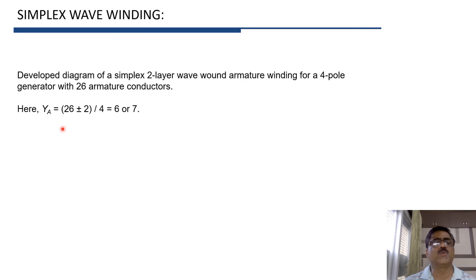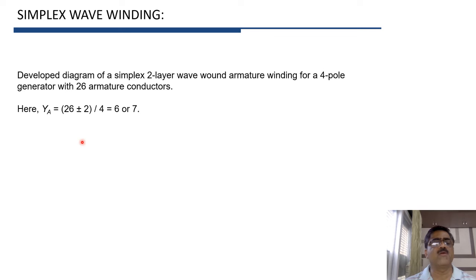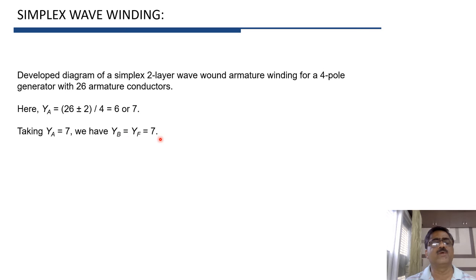YA = (Z ± 2) / P = (26 ± 2) / 4, so YA is either 6 or 7. Since YA is an integer, the winding is possible. We have to select the values of YB and YF — they must be odd and can be equal or differ by 2. We will take YA = 7 with YB = YF = 7, and prepare the winding table with these values.